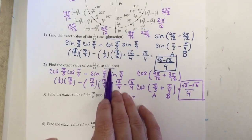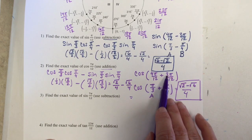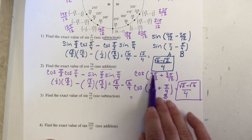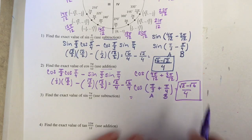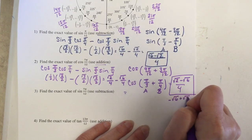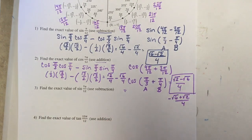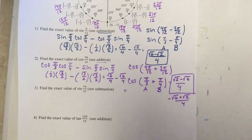Because this was an addition problem, you technically could have put 3π/12 in front of 4π/12. Your solution would have been (−√6 + √2)/4. These two solutions are equivalent, but if you wrote it in the opposite order, your terms would just be in the opposite order on the top. I just want to point that out in case you're checking your answers in the back of the book or working ahead of me.